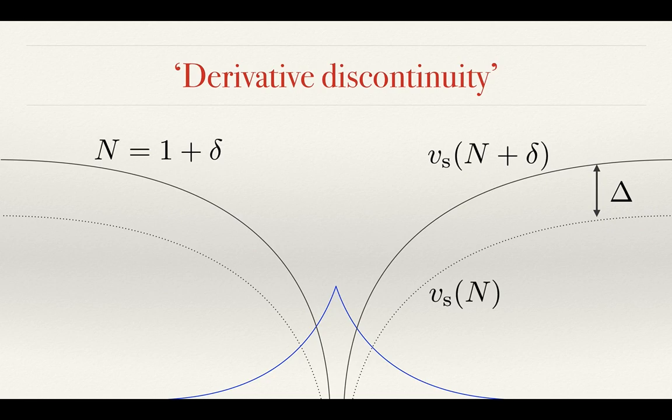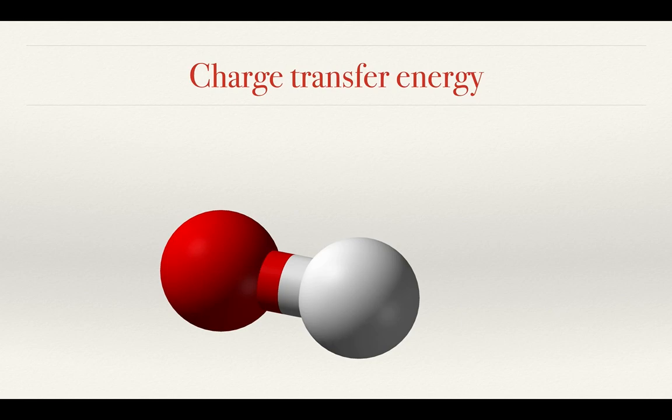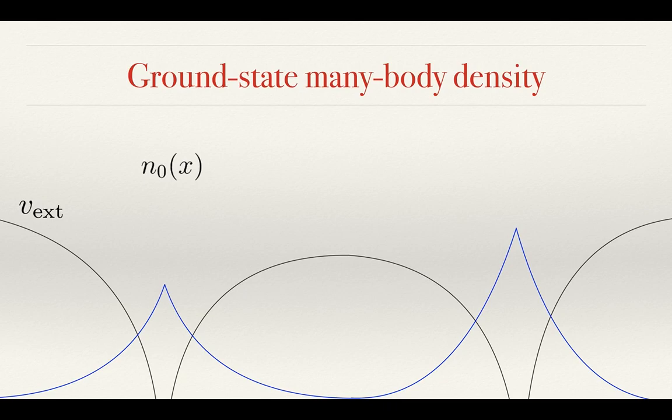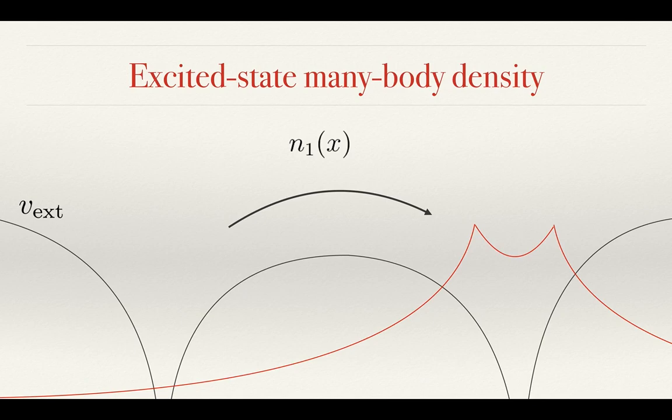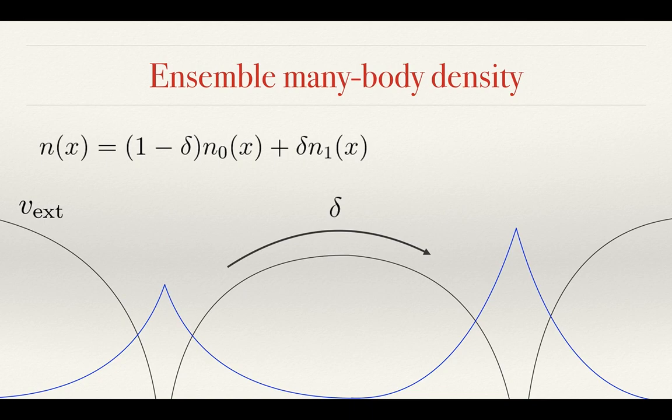With these two properties of the exact Kohn-Sham potential in mind, let us once again consider charge transfer. First, we define how charge transfer can be modelled in the many-body system of interacting electrons. The ground state density and the external potential look something like this. When the electrons are excited, the many-body density looks like this, with both electrons localised on the right atom. Therefore, we can control the amount of charge which is transferred by varying delta. When delta equals zero, our system is in its ground state and both electrons are separated. When delta equals one, both electrons occupy the acceptor atom.